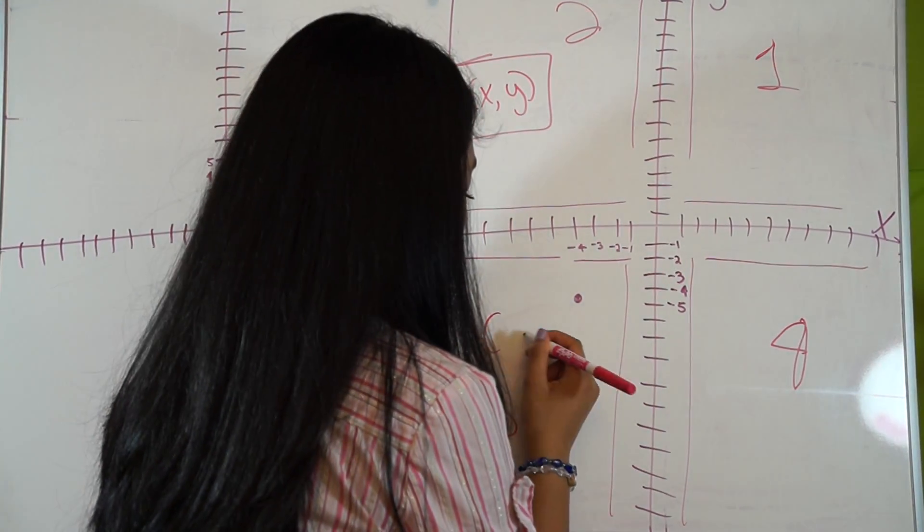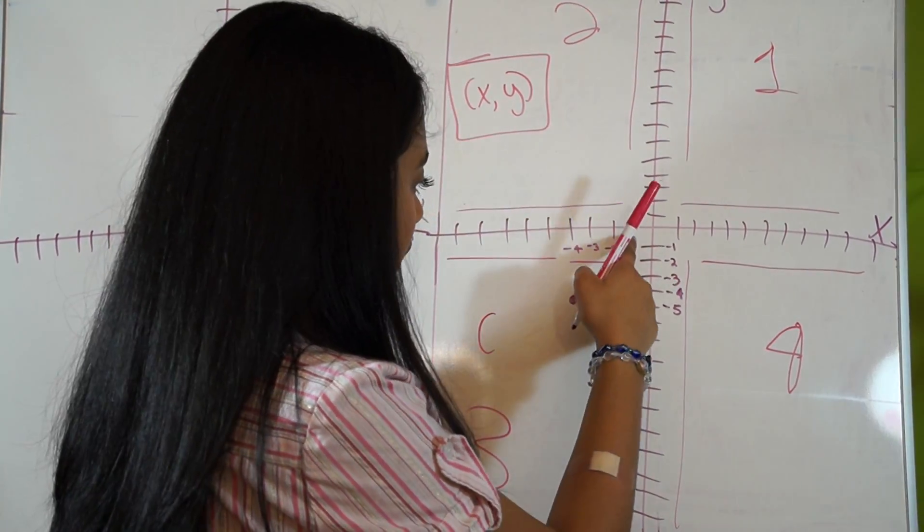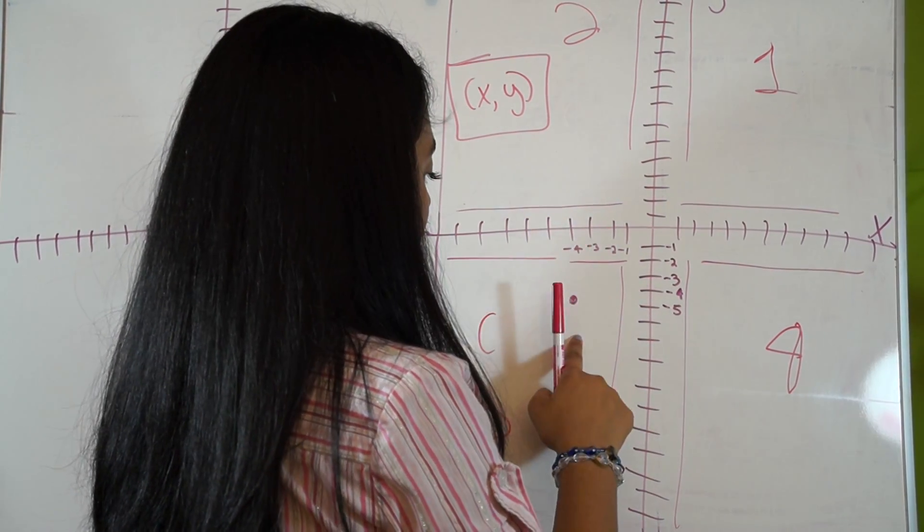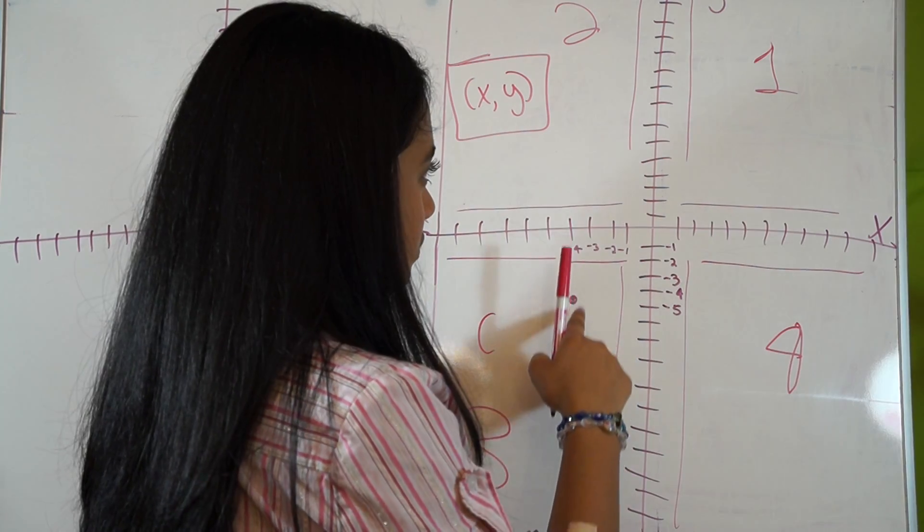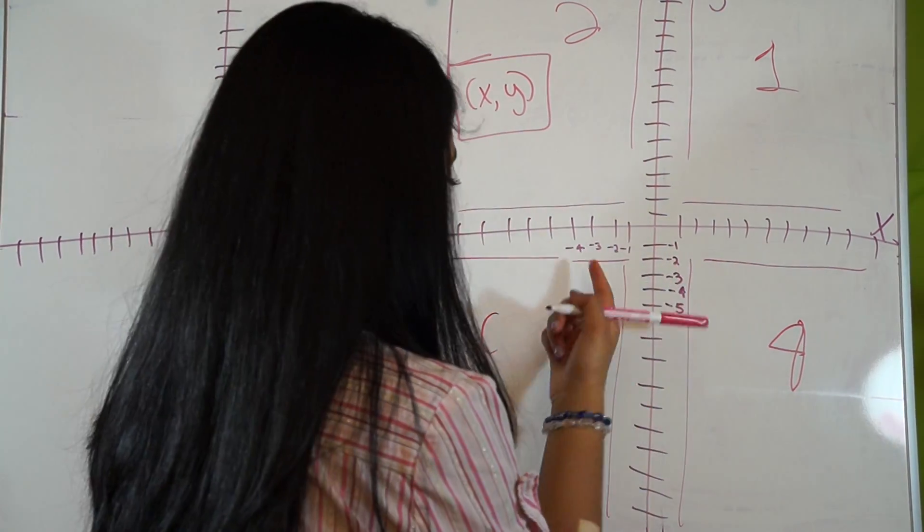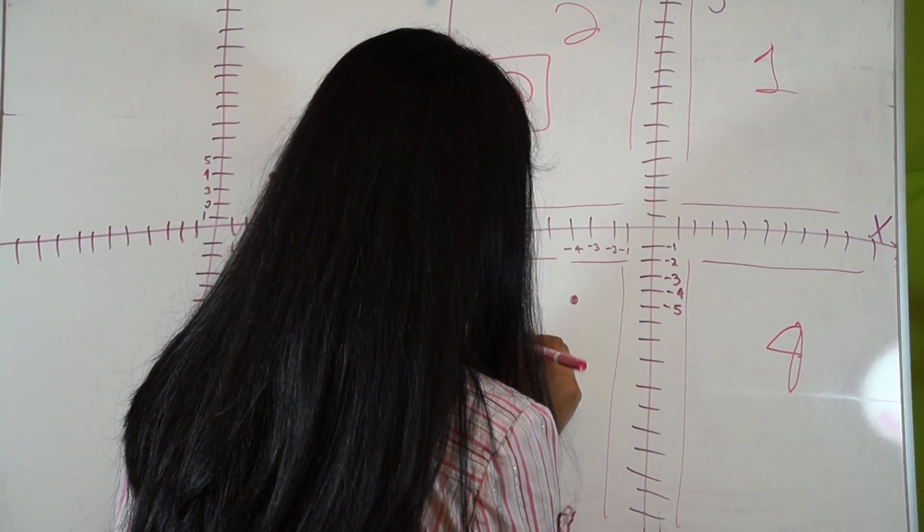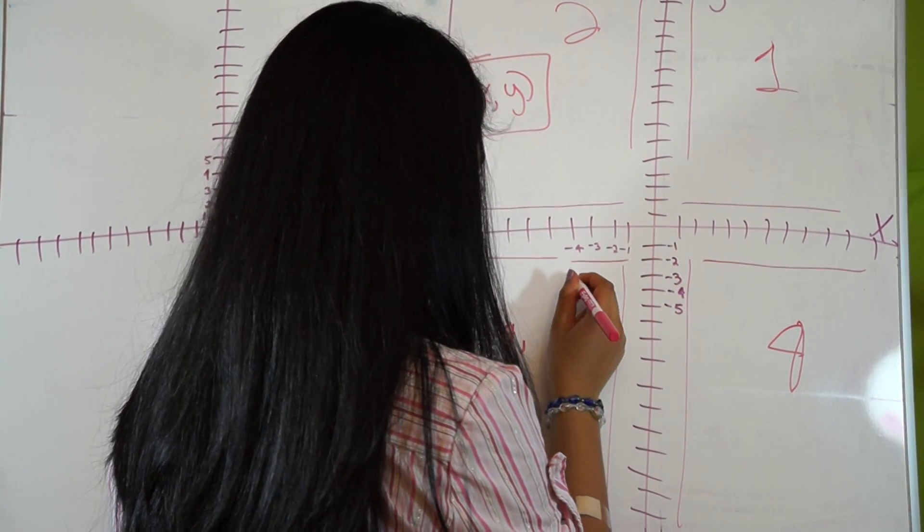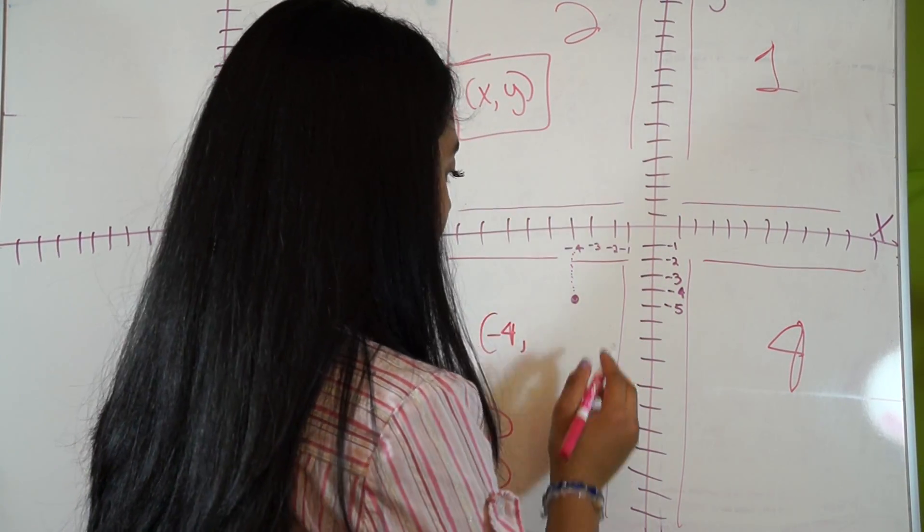So you have x for x and y. So our x for here would be negative one, negative two, negative three, negative four, cause it's up negative four. Yeah, up negative four I should say. This is negative four. Our x for here is negative four.